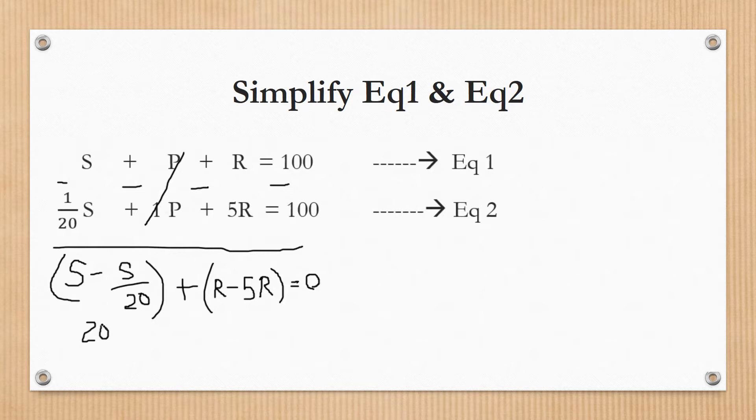S by 20, S minus S by 20. Find the LCM: 20S minus S by 20, which is 19S by 20. Then R minus 5R is minus 4R.